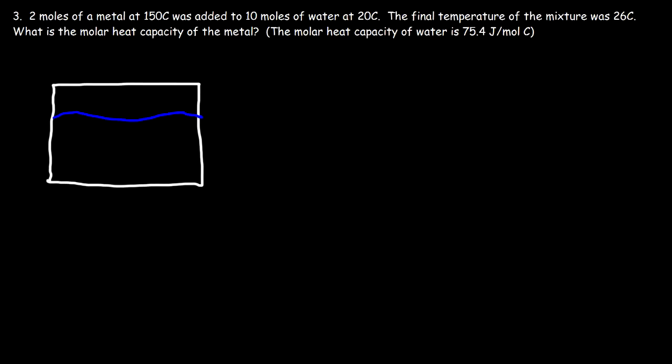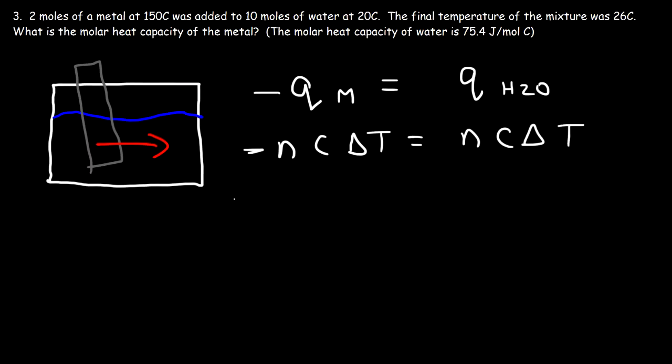Let's say this is the water and this is the metal. Heat is going to flow from the metal to the water. So the temperature of the metal is going to decrease from 150 to 26 and the temperature of the water is going to increase from 20 to 26 until they reach thermal equilibrium. The thermal energy lost by the metal is equal to the energy absorbed by the water. Now we need to put a negative sign because the metal released energy so it's exothermic for the metal, but the water absorbed it so it's endothermic. So we're going to have nc delta T on both sides of the equation.